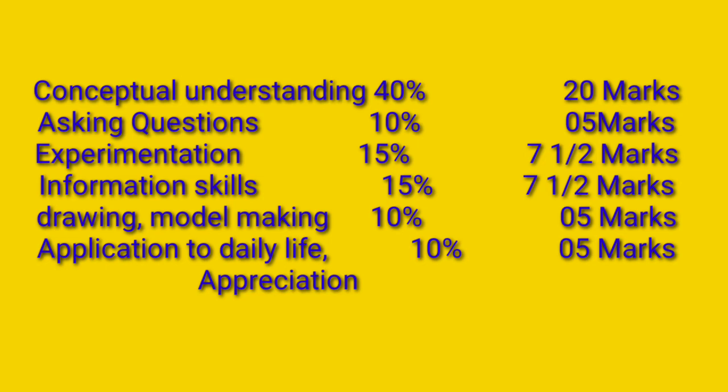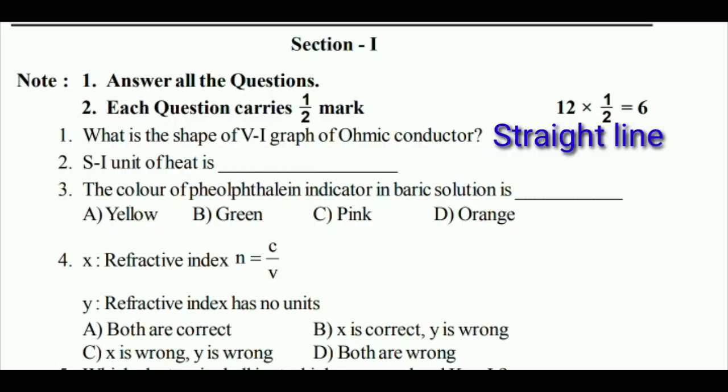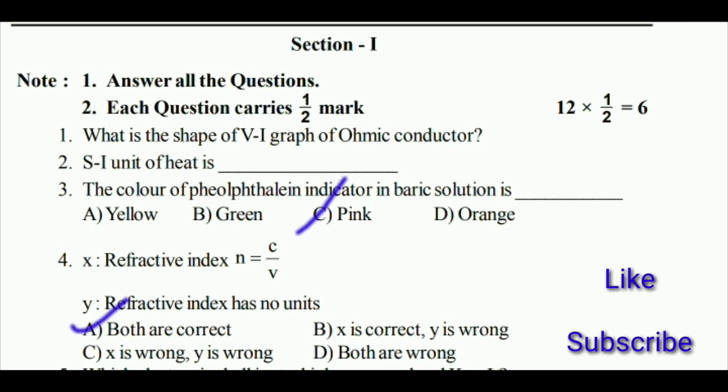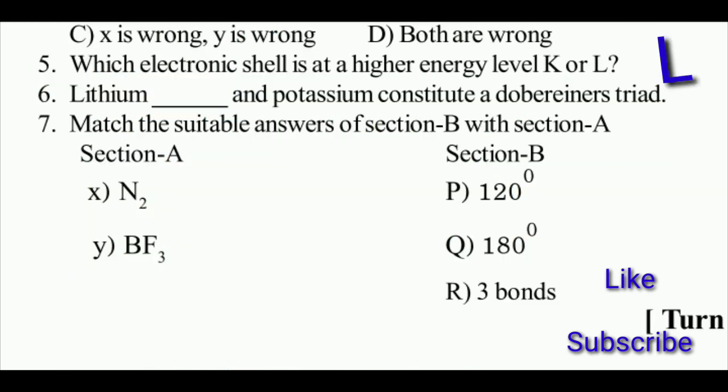Section one questions: What is the shape of V-I graph of ohmic conductor? Answer: straight line. SI unit of heat is joules. The color of phenolphthalein indicator in basic solution is pink color. Refractive index n = c/v, refractive index has no units, so both are correct.